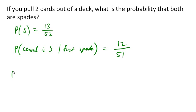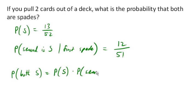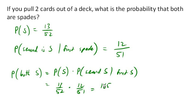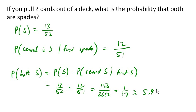To find the probability that both are a spade, we use the conditional probability version of the multiplication rule, which says the probability of the first event happening times the probability of the second event happening given that the first happened. So 13 out of 52 for the first spade, 12 out of 51 for the second spade, gives us a probability of 156 out of 2652, or 1 out of 17, or about 5.9% — the probability of getting 2 spades when we draw 2 cards.